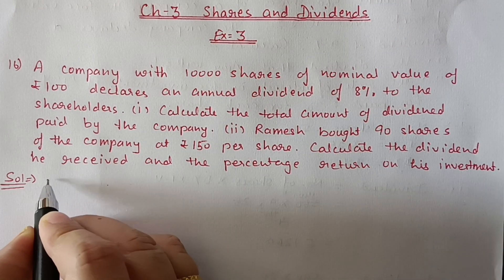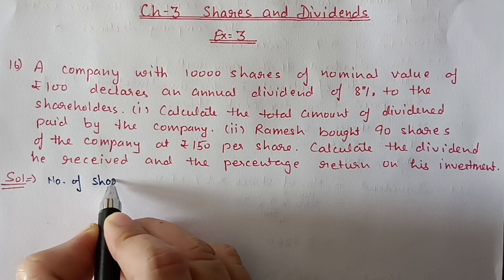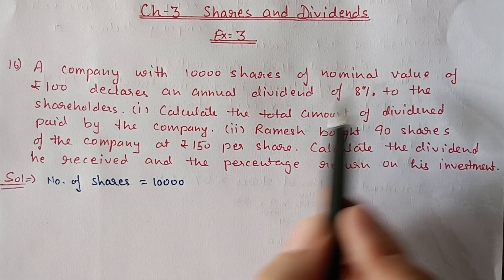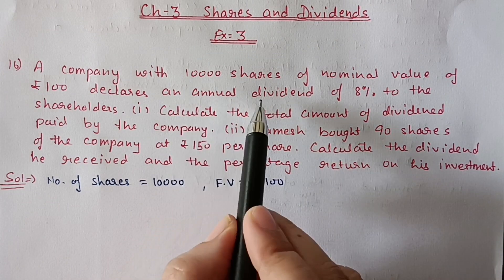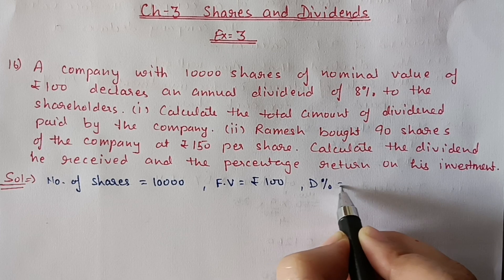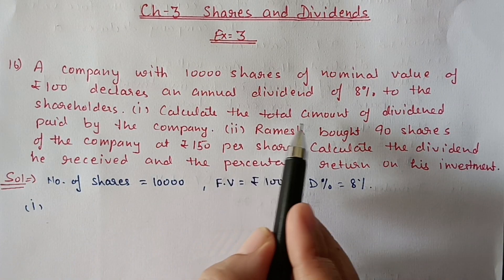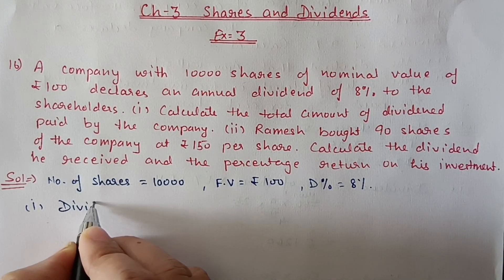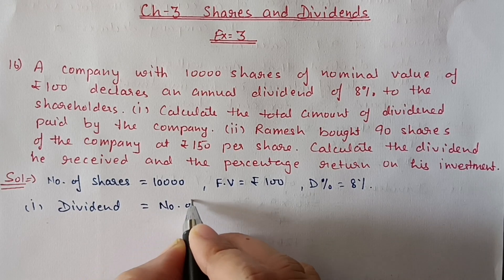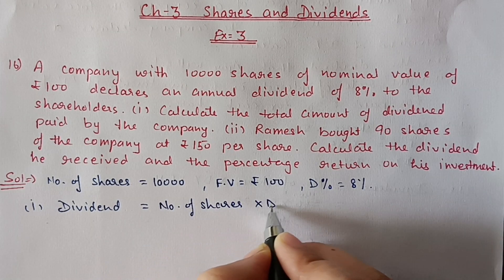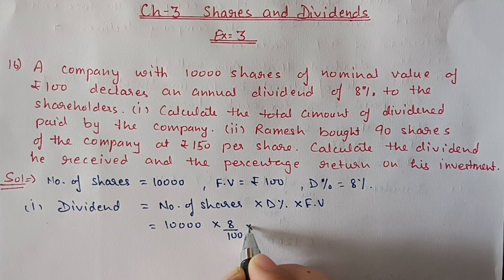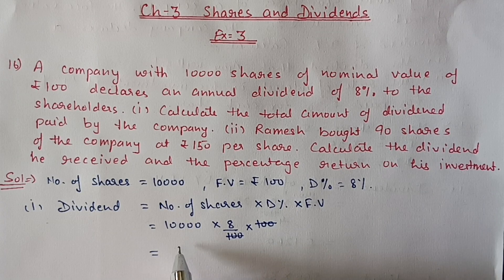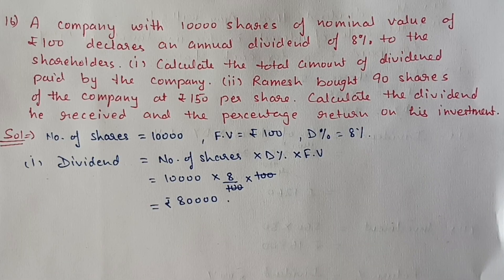First, the number of shares is 10,000. Second, nominal value (also called face value) is 100 rupees. Annual dividend percentage is 8%. In the first part we have to find the total amount of dividend paid by the company. Dividend equals number of shares multiplied by dividend percentage multiplied by face value: 10,000 × (8/100) × 100 = 80,000 rupees total dividend.